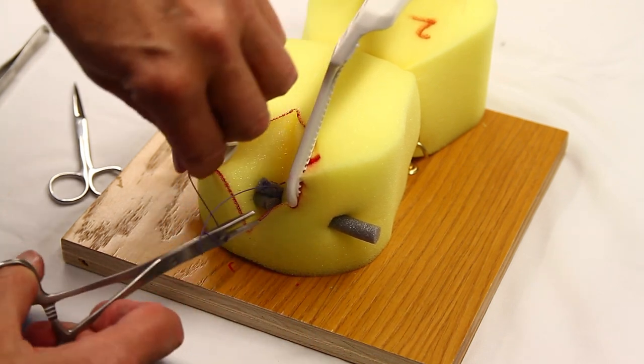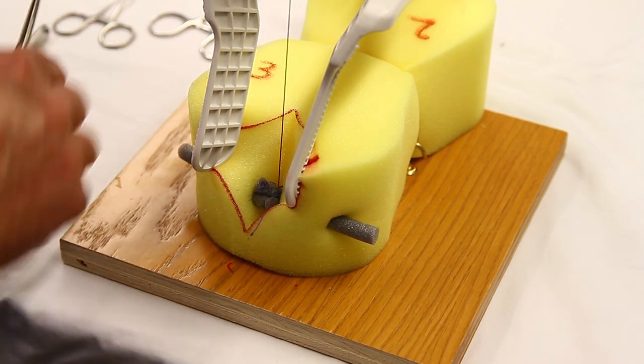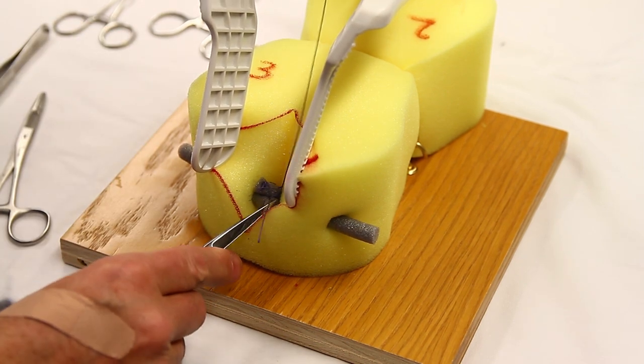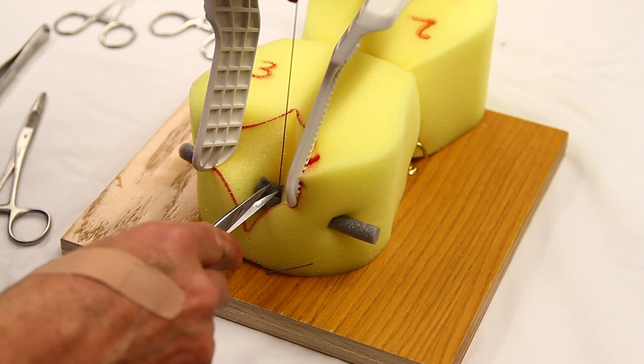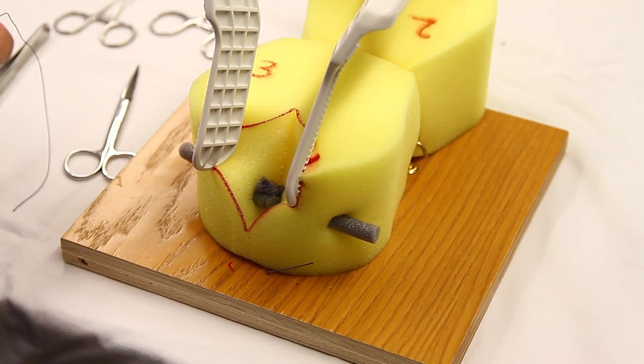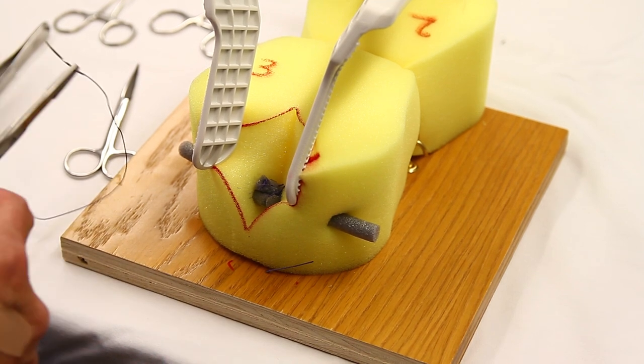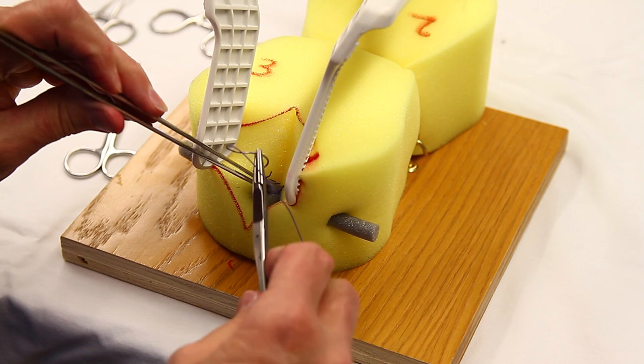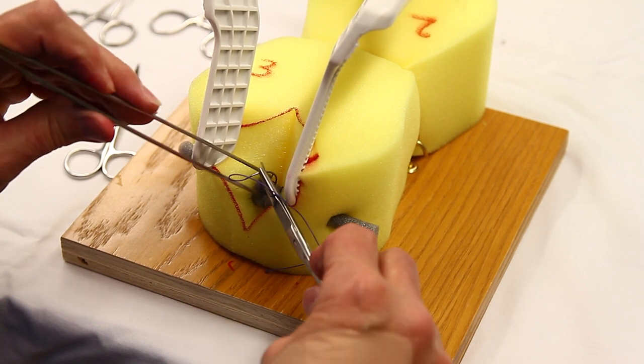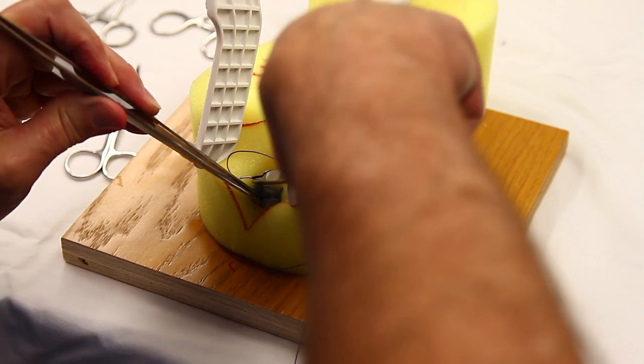Three knots, one of them being a double knot. And then the third one we can place between the other two. This is usually the easiest one because things are pretty stable by now.